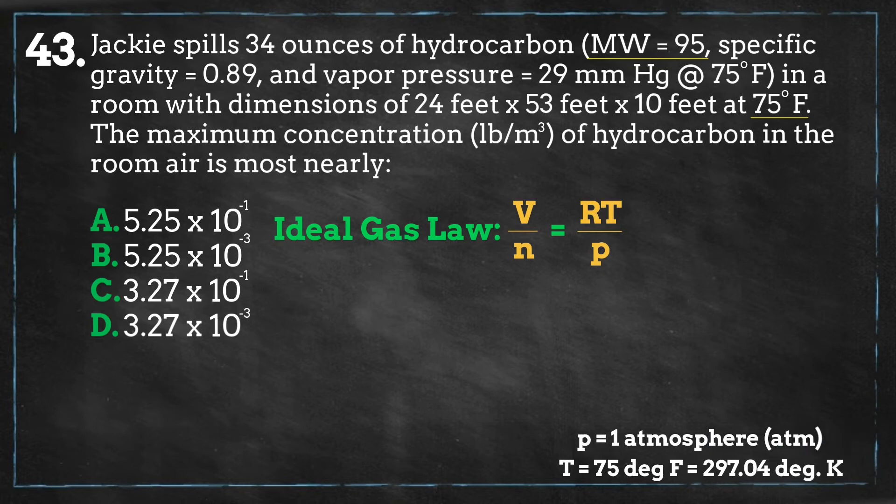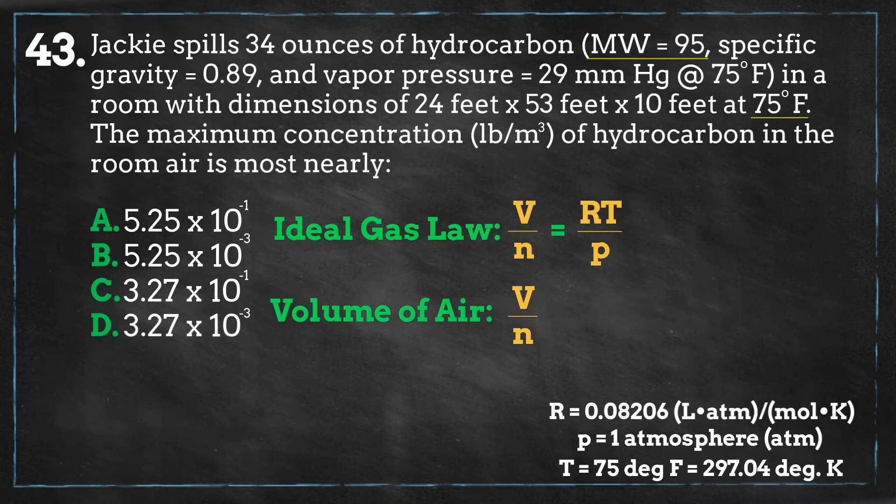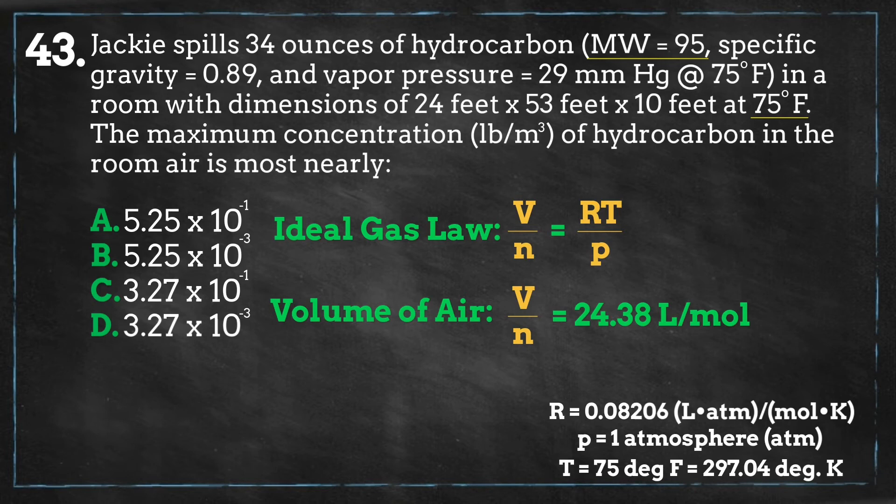We are assuming that the pressure within the room is at ambient levels, which equals 1 atmosphere, or 760 millimeters of mercury, and using the ideal gas constant R as 0.08206 liters atmosphere per gram mole Kelvin. We can calculate the volume of gram moles in the room to be 24.38 liters per gram mole.